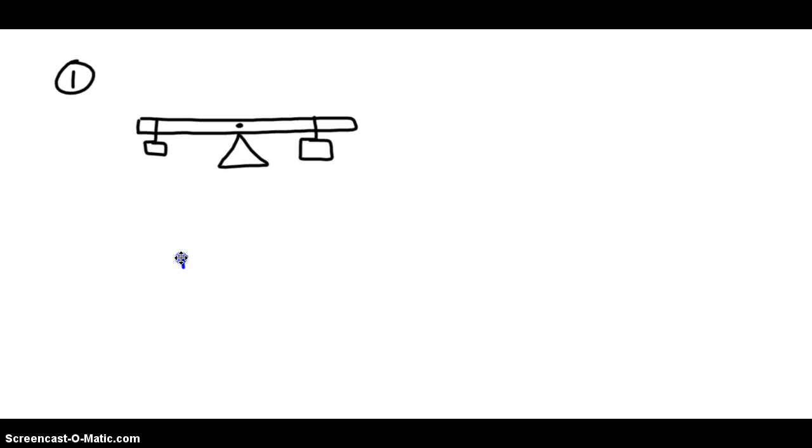Whenever something is in rotational equilibrium, that means that the sum of all the torques, or what we sometimes call the net torque, is equal to zero. When the thing is in translational equilibrium, that means the net force is zero. We're used to that. We've solved problems in the past using that fact.